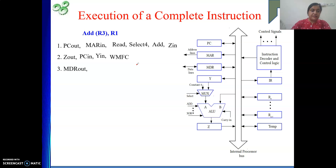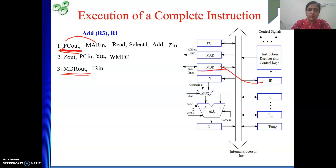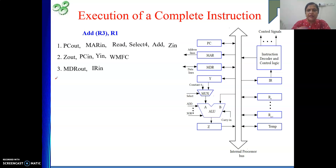Once we come out of WMFC, data is in MDR — and since MAR was loaded from PC, what came into MDR is your instruction. MDR's content is redirected to IR: MDR out, IR in. With the instruction now in IR, it is decoded. We find that one operand is in memory (the content of the address held in R3), so we need to fetch that operand from memory.